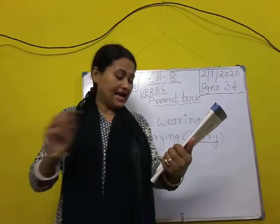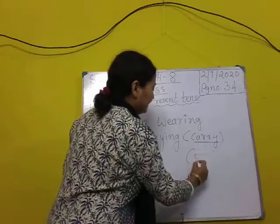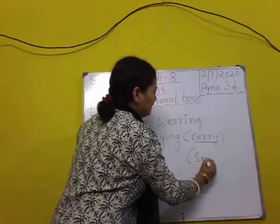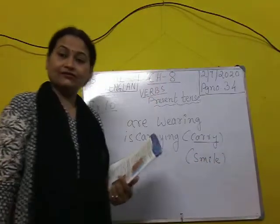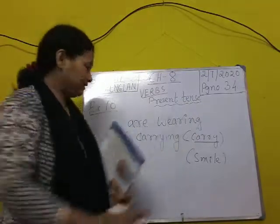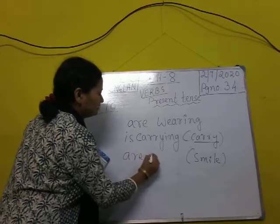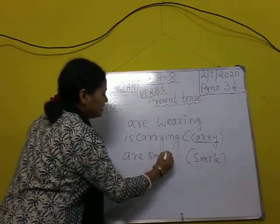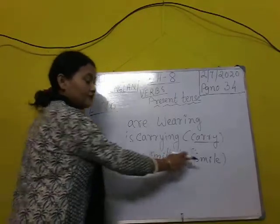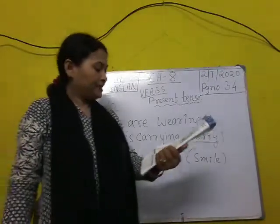Then: Tanya and Tarun dash smile. The word given in the bracket is 'smile' — S-M-I-L-E. So what we will write is: Tanya and Tarun are smiling — S-M-I-L-I-N-G. We got this word from the verb in the bracket, which is the action word.